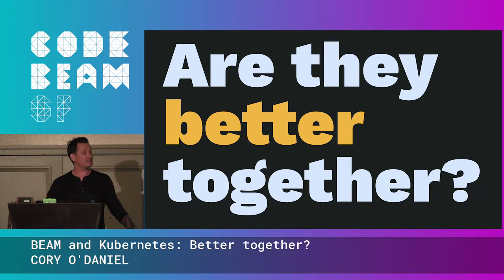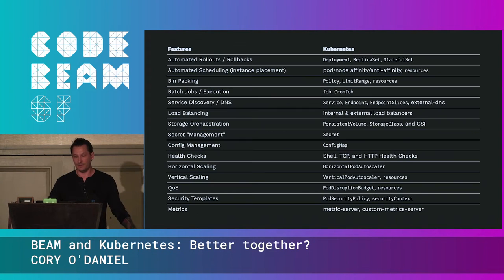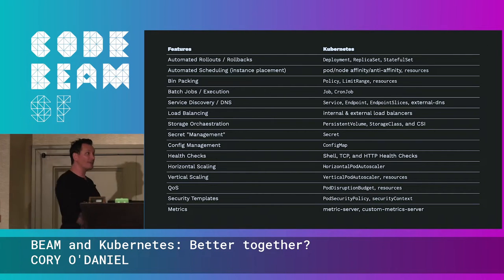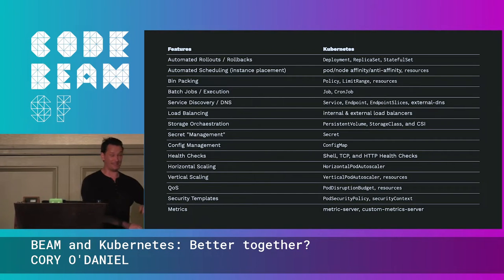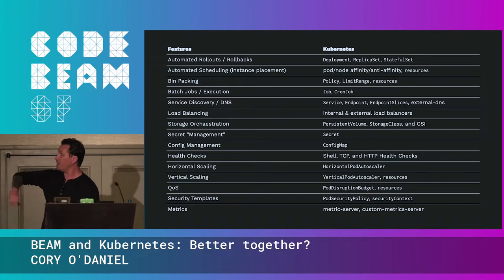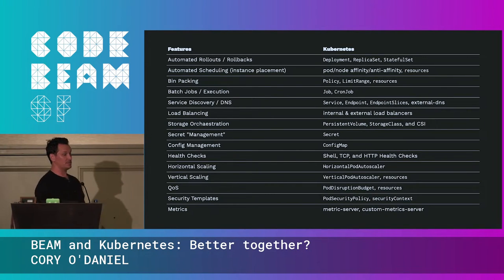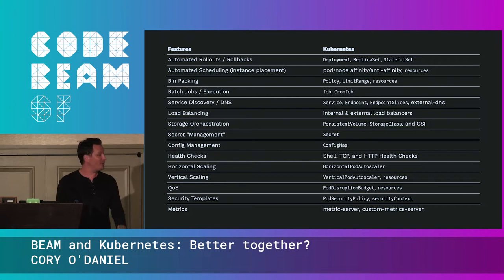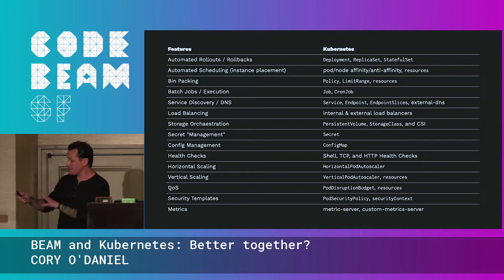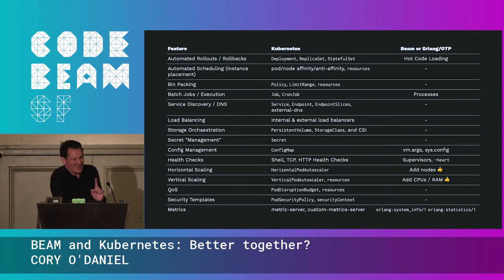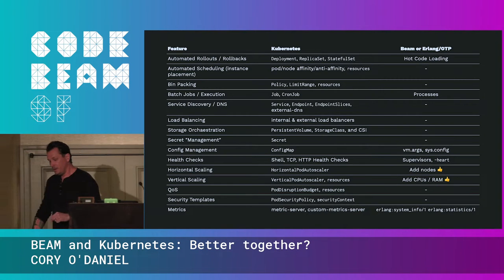I'm about to show you something intense. This is just the marketing page feature list for Kubernetes — a landing page with a lot of tables and words. Don't get hung up on this. On the right are the different components of Kubernetes you use to get those features. There are a lot of features here that might really float your boat. We're going to see this a lot throughout this talk, and it's going to get more intense because we'll see it next to features that the BEAM has.